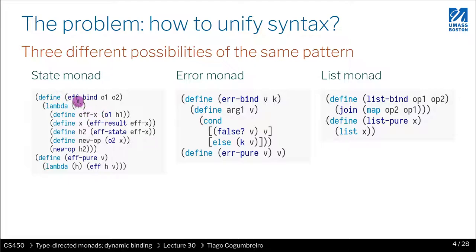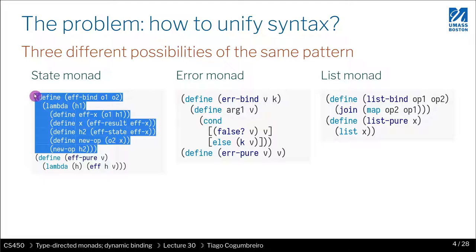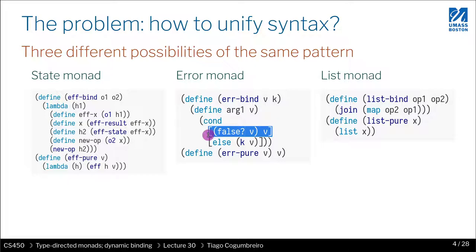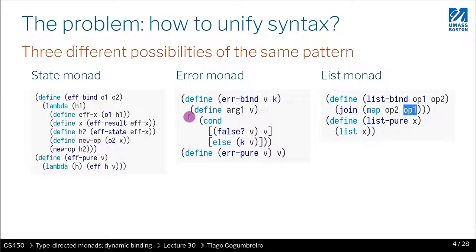You have the same two patterns. One is a bind operator that is able to thread or combine two effectful operations. We can do that in the state monad, where we update the memory behind the scenes, or the state more generally. And in the error monad, where we are essentially aborting computation once we find an error. So we also have bind. And in the list monad, where we are iterating over all elements of a list given in op1. So this is bind.